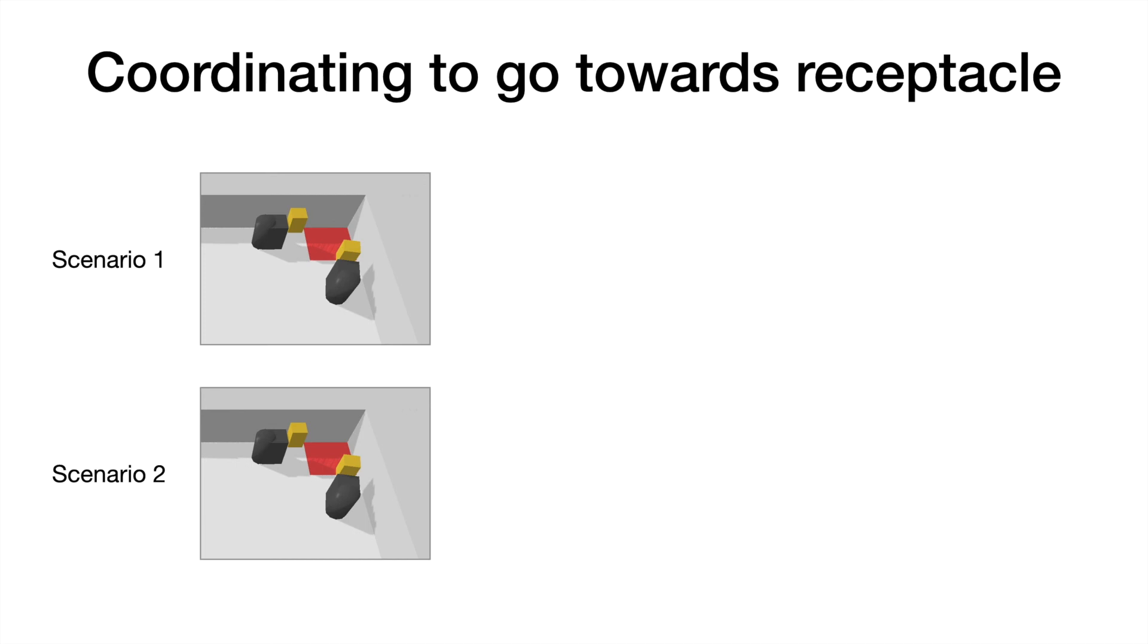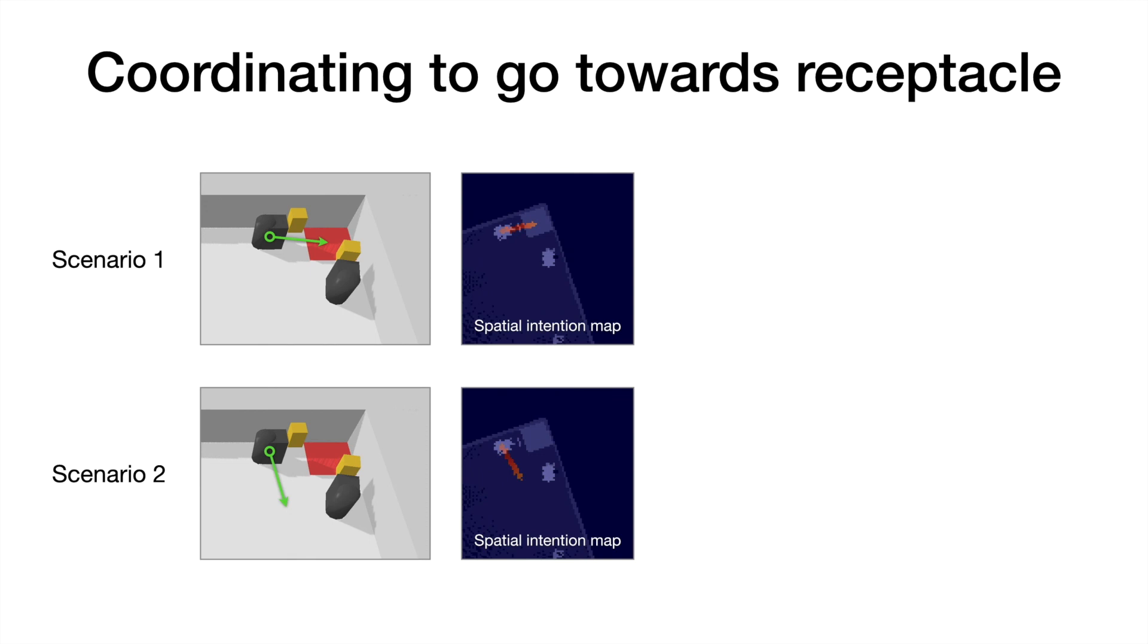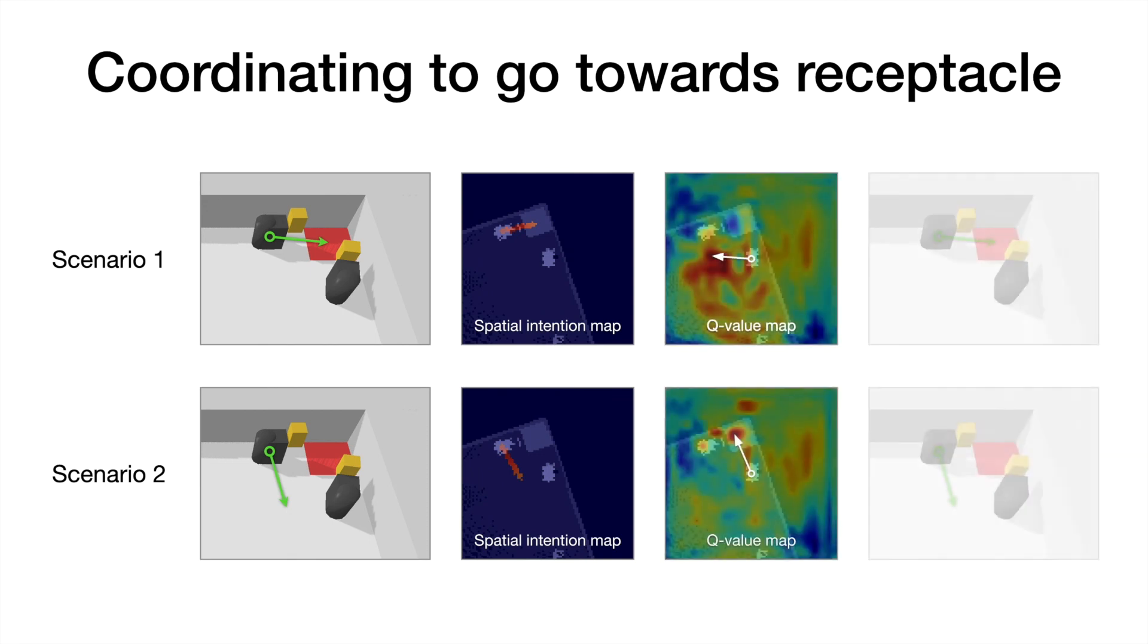One benefit of using a dense action space is that we can visualize action predictions by looking at the Q value maps. Here we examine a pair of scenarios where there are two robots. Both are trying to go towards the receptacle. In each scenario, we consider a different intention for the robot on the left, and then we look at the resulting Q value map of the robot on the right. In both scenarios, we see that the robot on the right chooses an action that avoids colliding with the other robot.